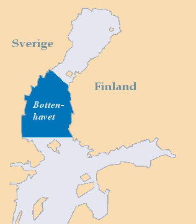The surface area of the Bothnian Sea is approximately 79,000 square kilometers. The largest coastal towns, from south to north, are Rauma and Pori in Finland, and Gävle and Sundsvall in Sweden. Umeå and Vaasa lie in the extreme north, near Bothnian Bay.